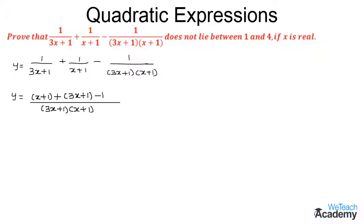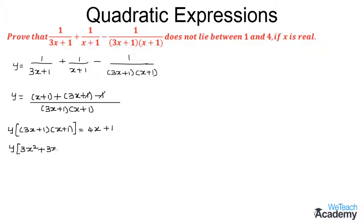We can cancel the +1 and -1. By cross multiplying, y into (3x + 1)(x + 1) equals, and adding x + 3x on the RHS, we get 4x + 1. Expanding the left side: 3x² + 3x + x + 1, which gives 3x² + 4x + 1, equal to 4x + 1.